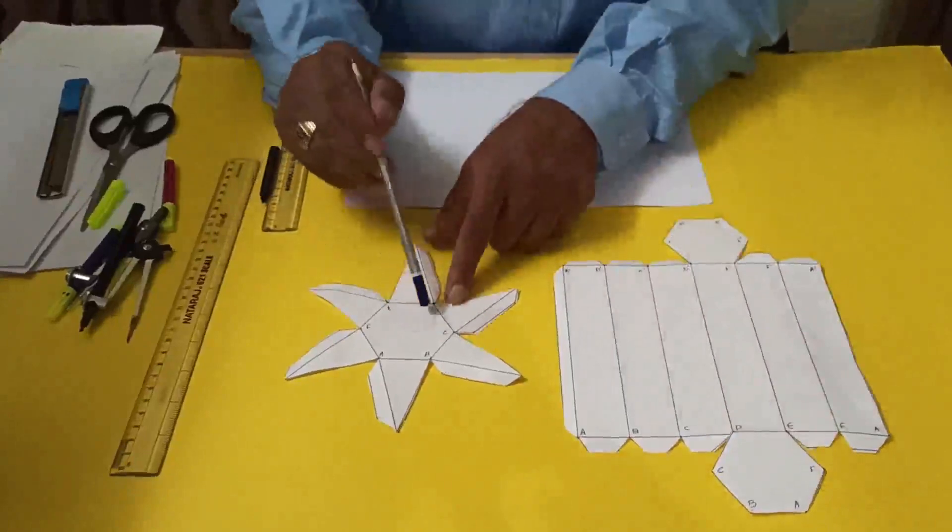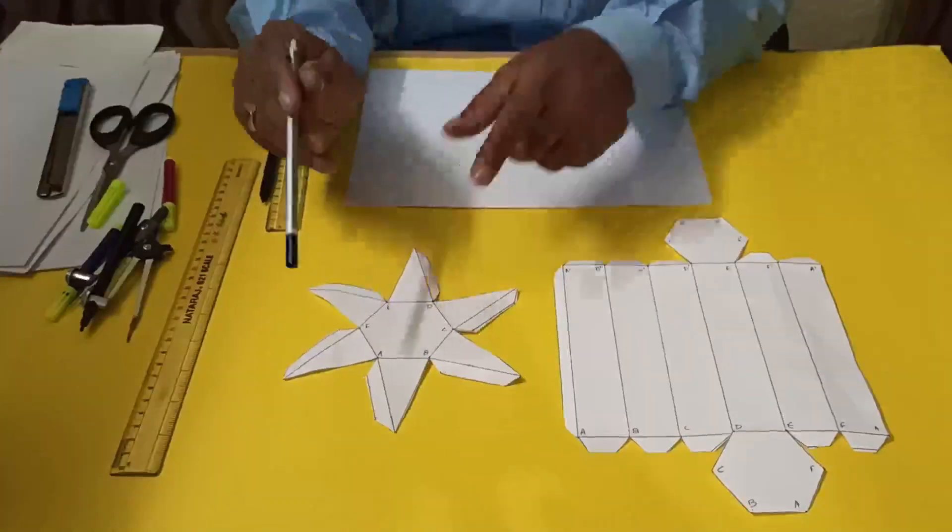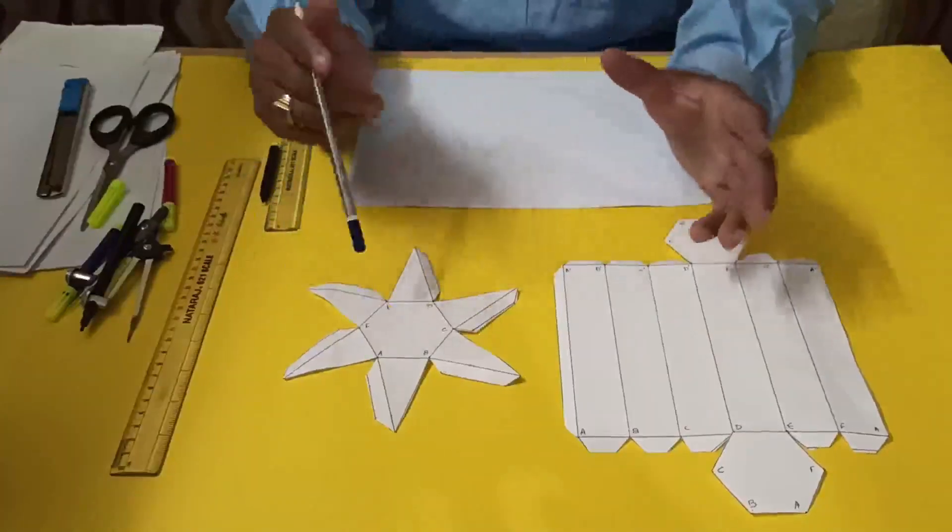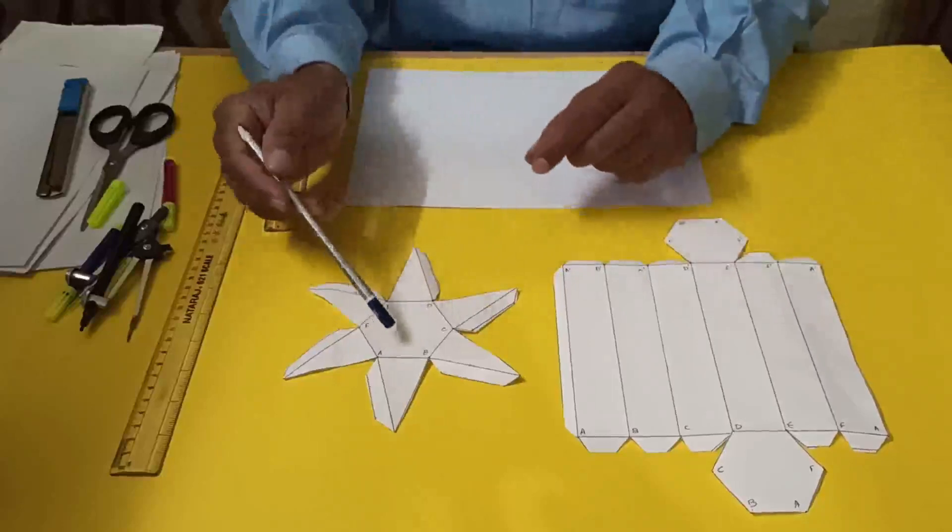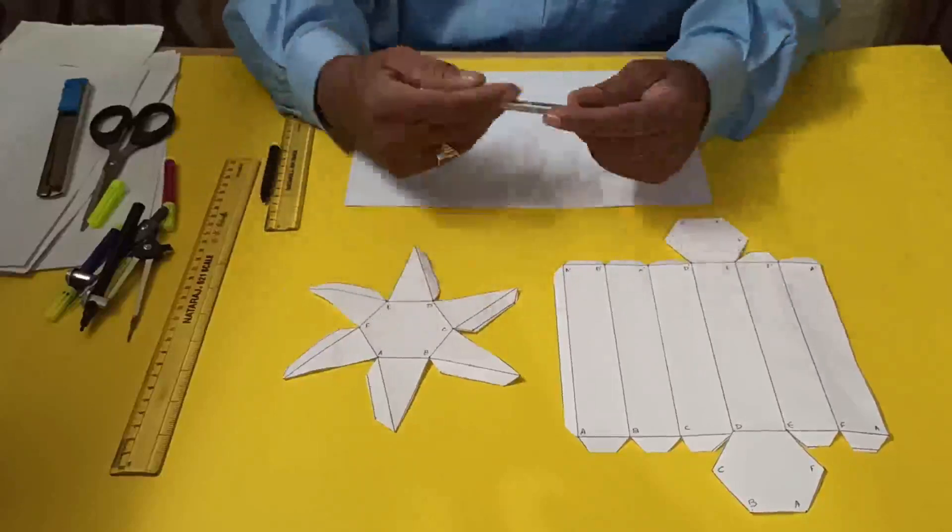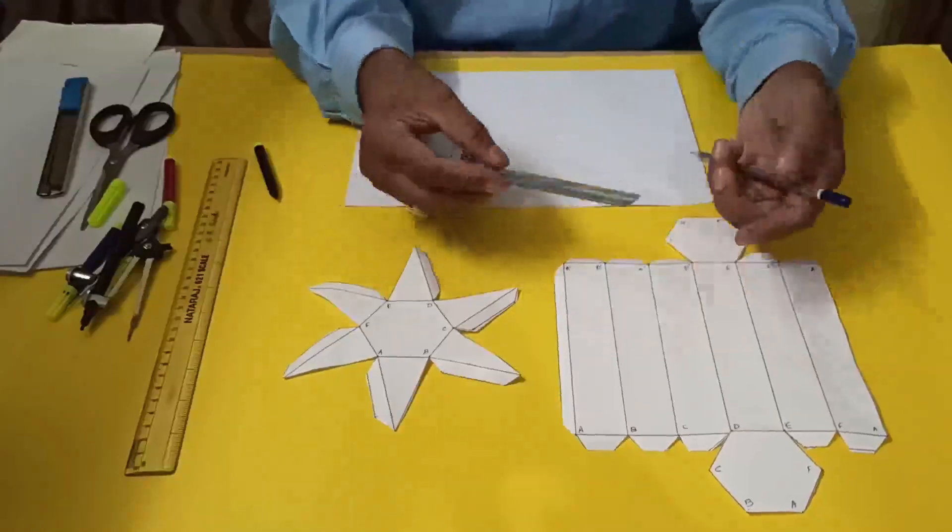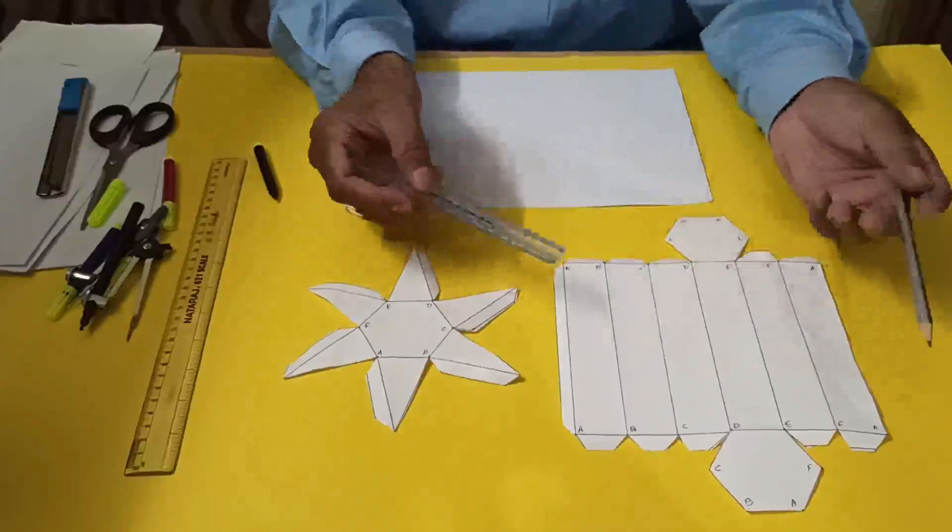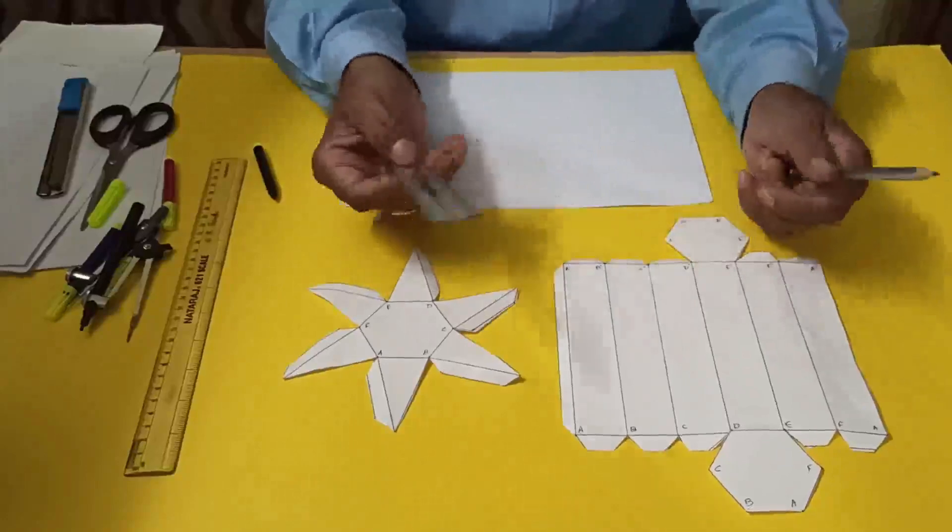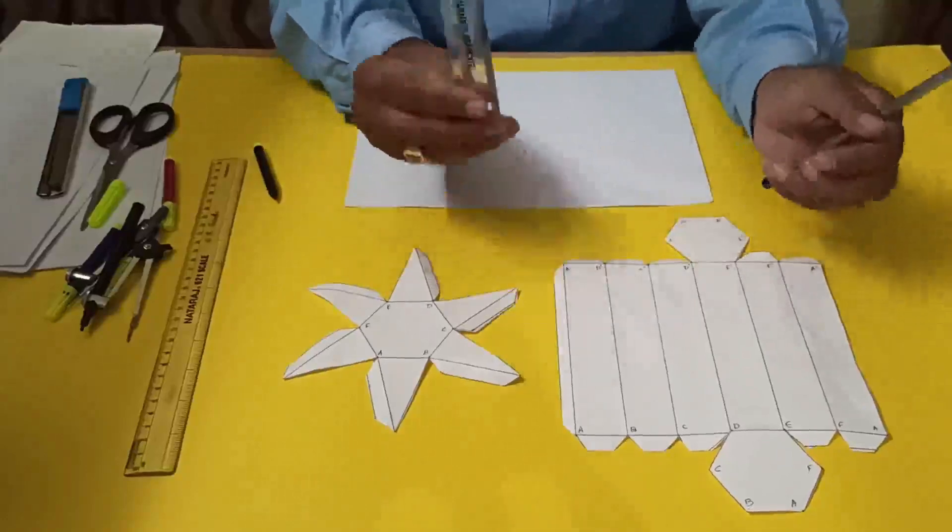First we have to measure the height and width of the cylinder. The height is 15 centimeters and the side of the hexagon is 3 centimeters.